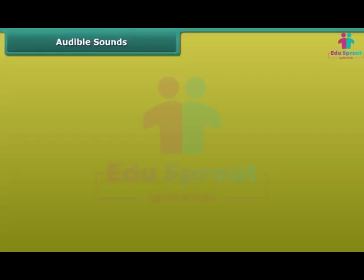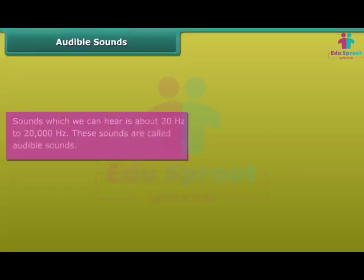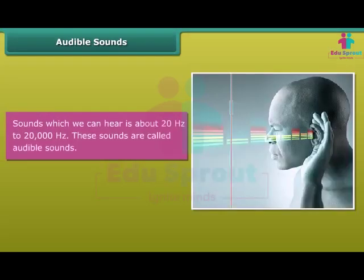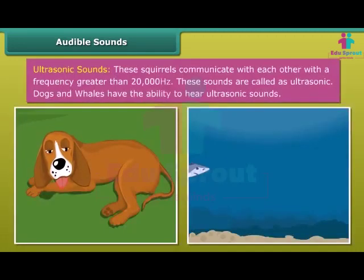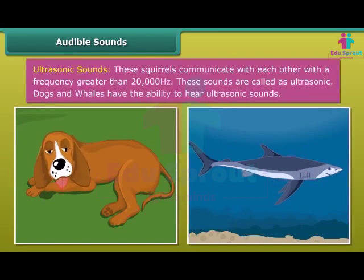Audible sounds: Sounds which we can hear range from about 20 hertz to 20,000 hertz. These sounds are called audible sounds. Ultrasonic sounds: Squirrels communicate with each other with a frequency greater than 20,000 hertz. These sounds are called ultrasonic sounds.